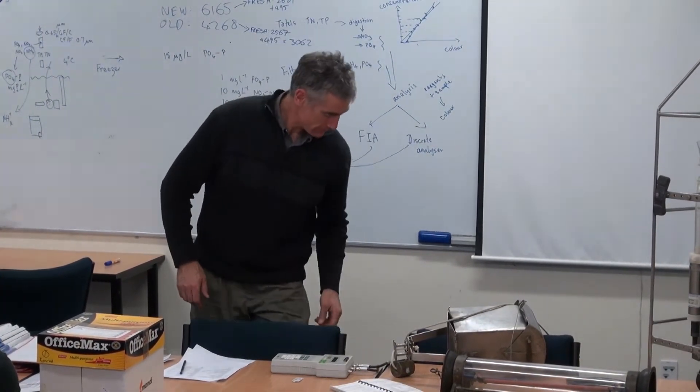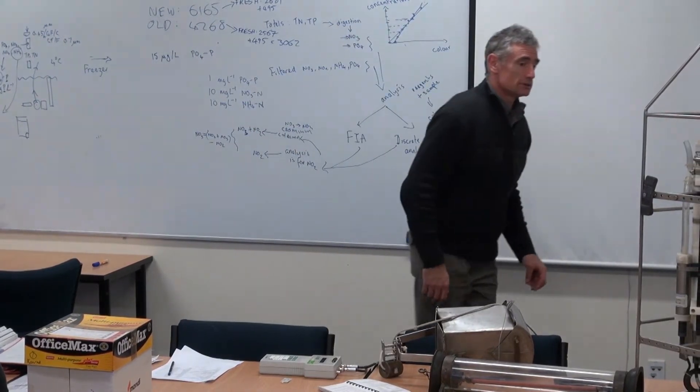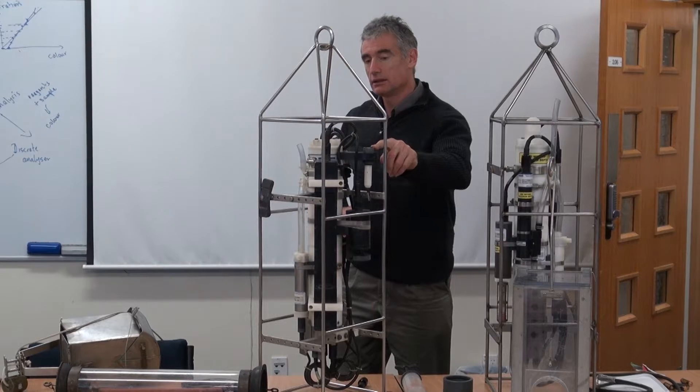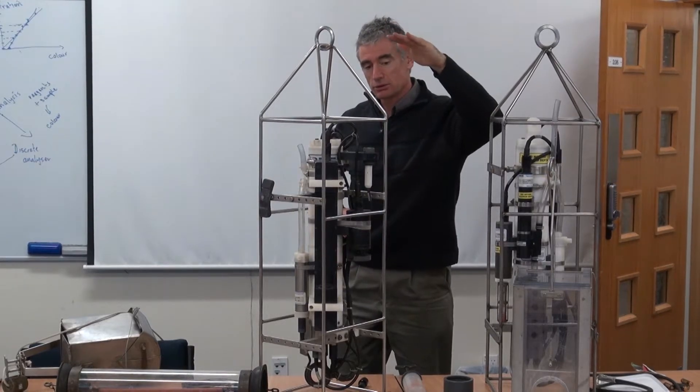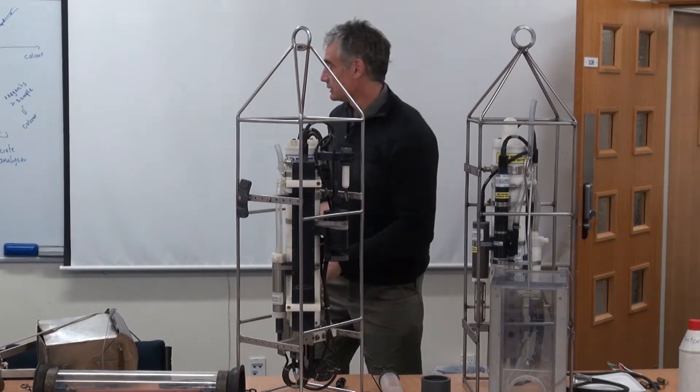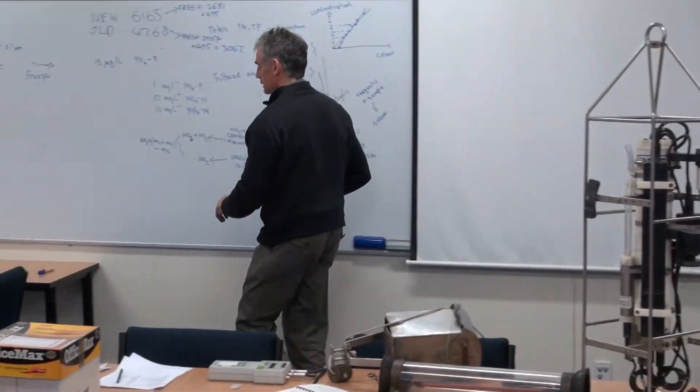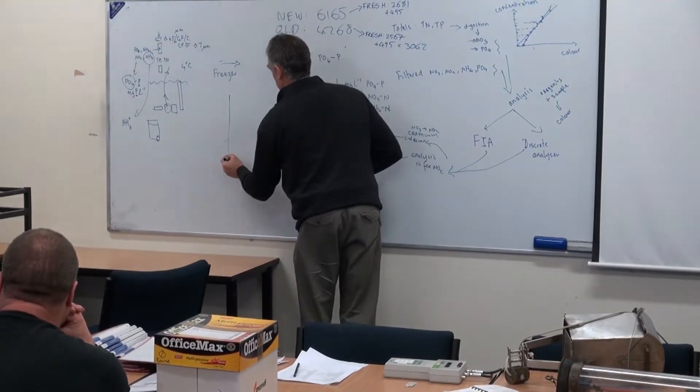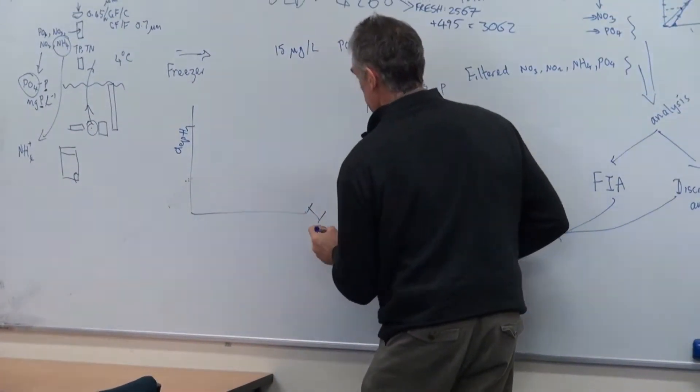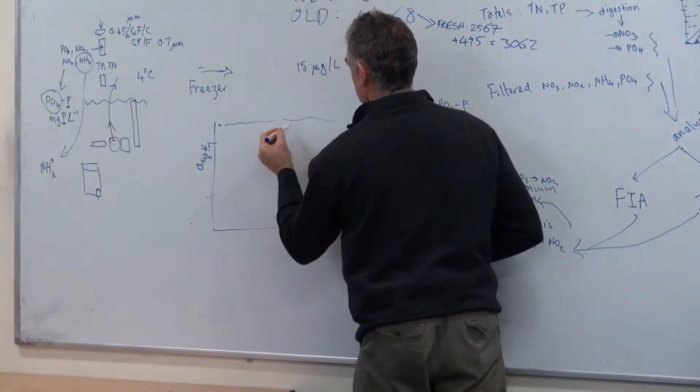But essentially, what this instrument does here, it's got the light meter there, and as it goes down every four times a second, it's taking a light reading and it knows the depth. And so what you're able to plot is that light reading will be something that looks like depth. And light gives you some light, visual surface,